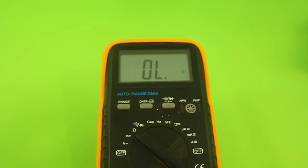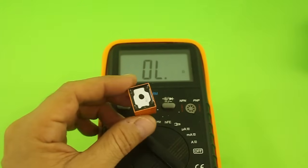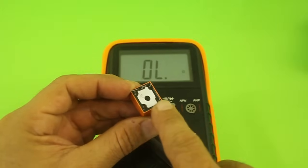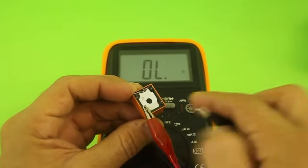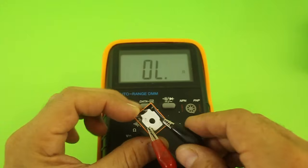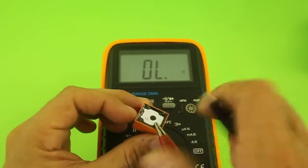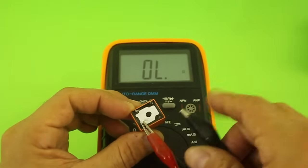With the multimeter in the ohms scale, let's proceed to check our relay. Let's check first this pair here and we can see that we do not have any resistance. This is not the coil. Let's check this other two,